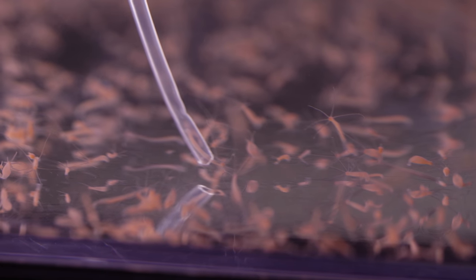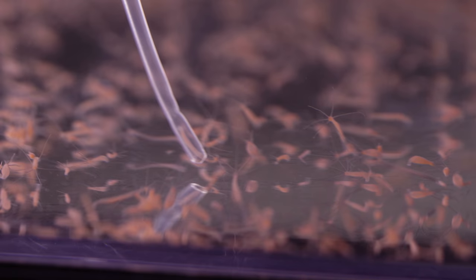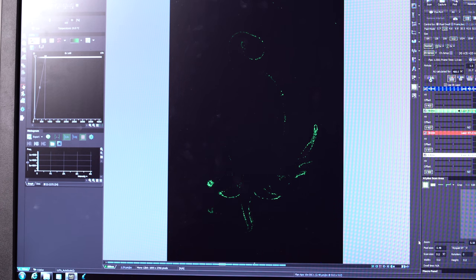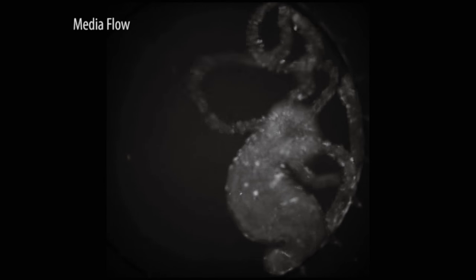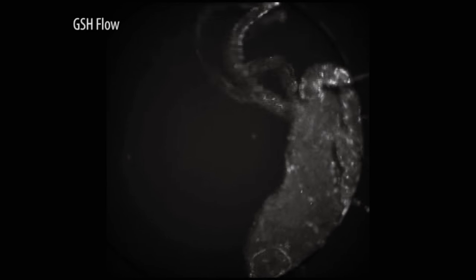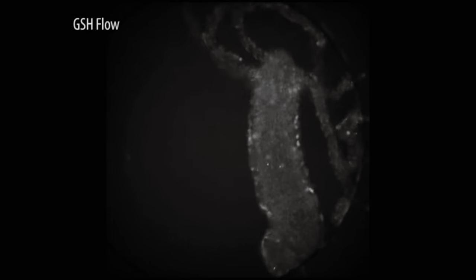One is that we have new genetic tools. We can manipulate the genome of these animals in a way that allows us to visualize the activity of neurons. We have new indicators of neural activity based on fluorescence or light, so we can use light to map the activity of the brain and muscle system.